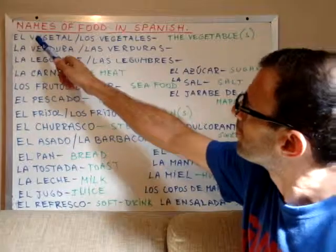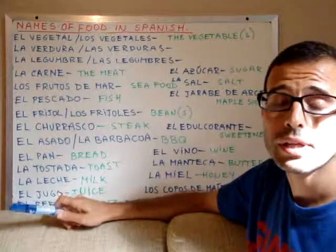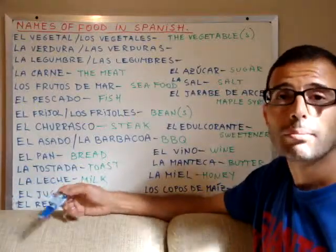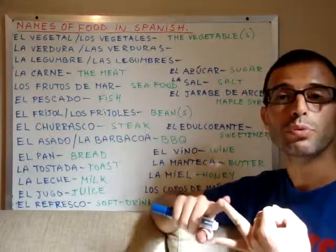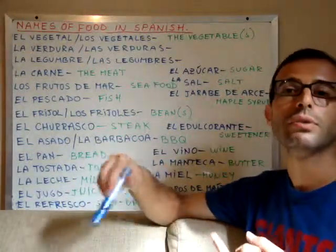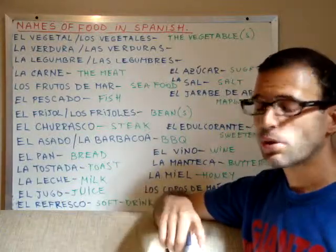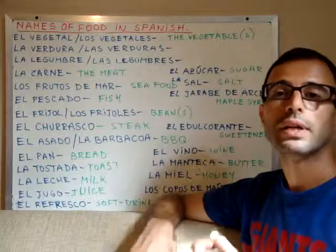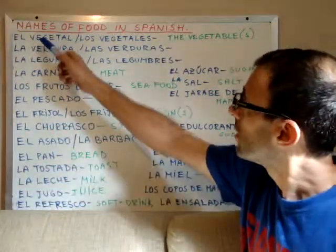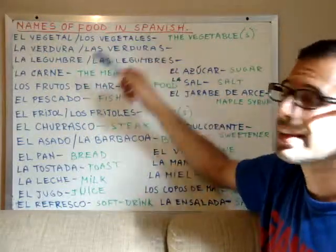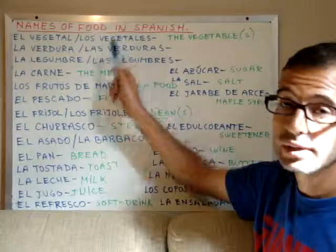For example, el vegetal, or los vegetales for the plural, means vegetables — but vegetables in the broadest sense, including fruits, roots like potatoes, turnips, onions, sweet potatoes, and also spinach, lettuce, cauliflower, and all those. That is vegetal or vegetales — it's the widest, the broadest of all the categories for vegetables.